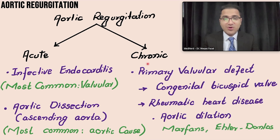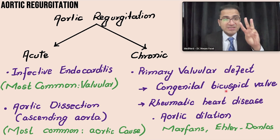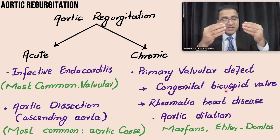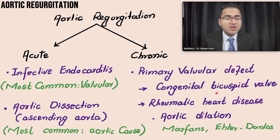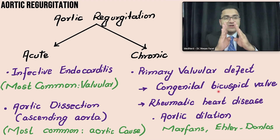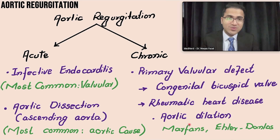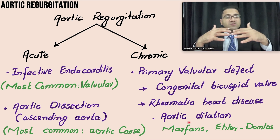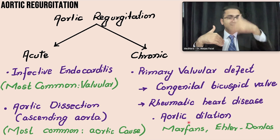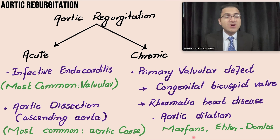In chronic causes, patients have primary valvular defects. They can have a congenital bicuspid aortic valve — normally three cusps form the aortic valve, but some patients have only two, increasing the risk of regurgitation if damaged. Rheumatic heart disease can also cause aortic regurgitation. Aortic dilation occurs especially in connective tissue disorders like Marfan syndrome and Ehlers-Danlos syndrome, where the valves are loose and do not close properly, allowing blood to regurgitate back to the left ventricle.